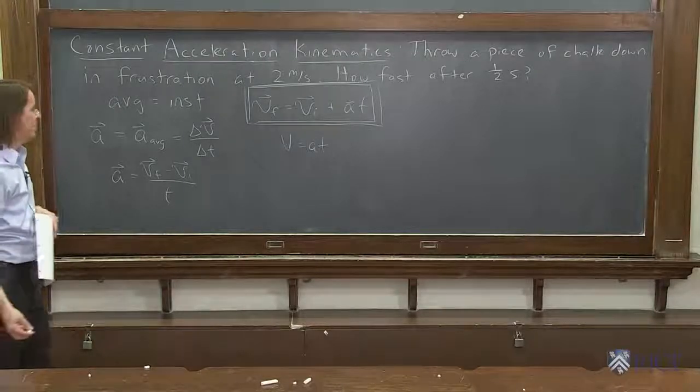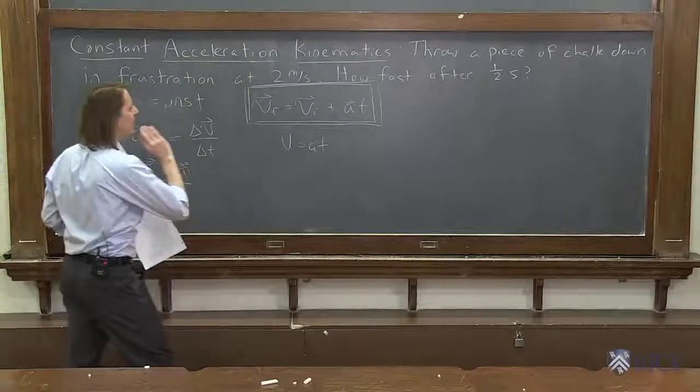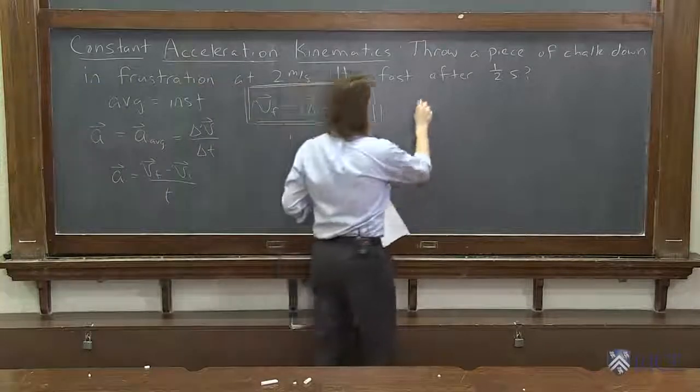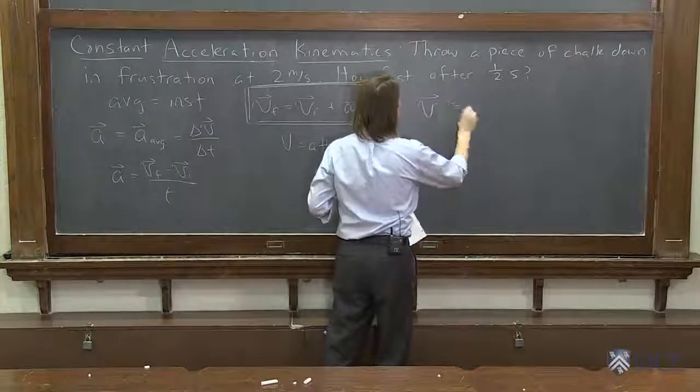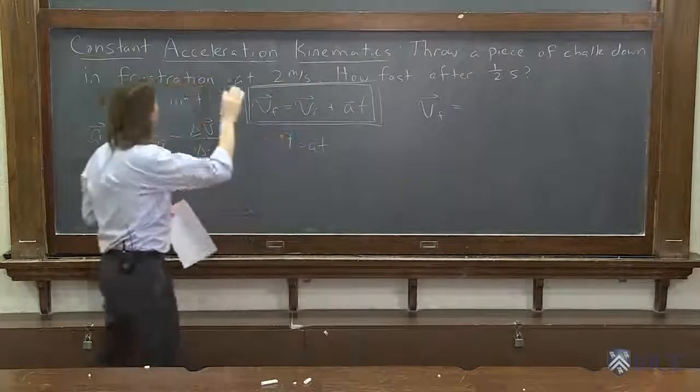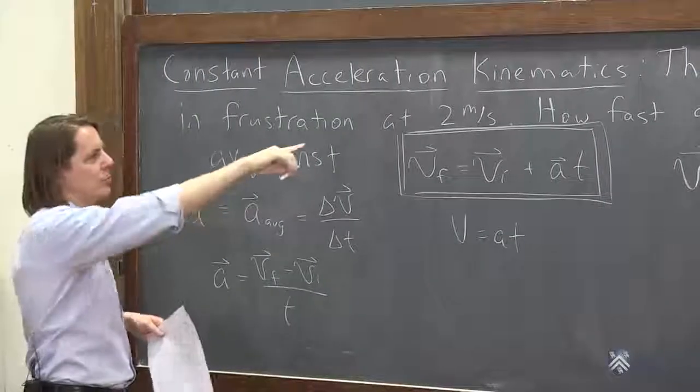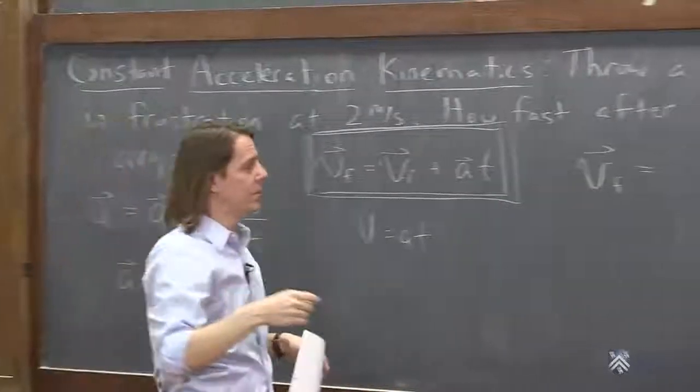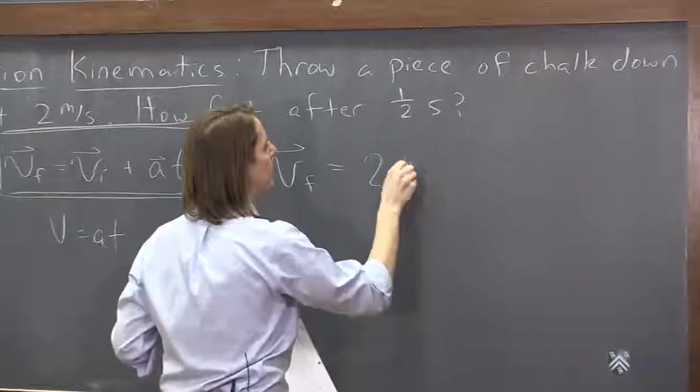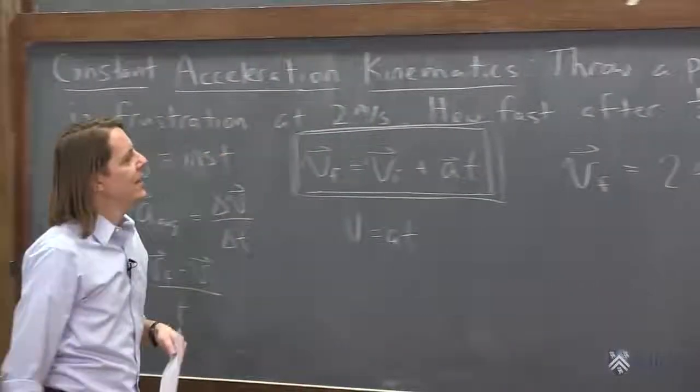Let's solve our problem then. So it's pretty straightforward here. How fast did it get going? So v_f is what we want. And if I threw it down at 2 meters per second before I released it, right when I released it, 2 meters per second was its initial. Right? So that's equal to 2 meters per second plus at.